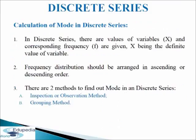Next we come to calculation of mode in discrete series. In discrete series, values of variables x and corresponding frequency f are given, x being a definite value of the variable. The frequency distribution should be arranged in ascending or descending order. There are two methods to find out mode in a discrete series: first is inspection or observation method, and second is grouping method.